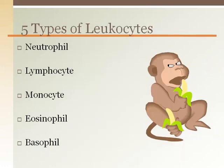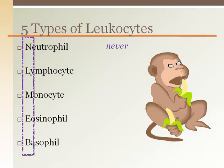There are five different types of white blood cells: neutrophils, lymphocytes, monocytes, eosinophils, and basophils. They are listed in order from the most numerous to the least numerous. One helpful acronym to remember their order is 'Never Let Monkeys Eat Bananas.'